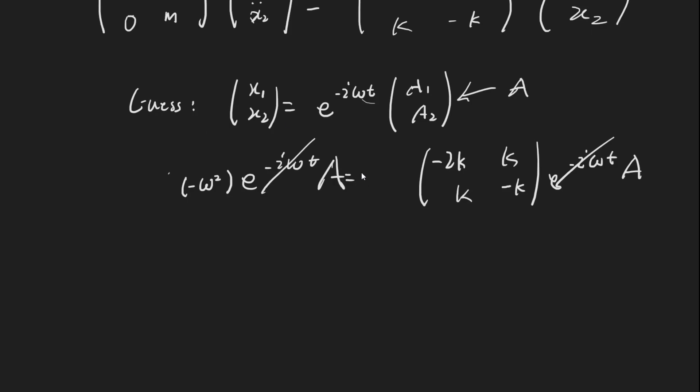So we can write it's equal to 1 over m, 0, 0, 1 over m. And we can move this over, factor out the A, and that should give us, well, let's multiply this out first. It's going to be minus 2k over m times k over m, and then it's going to be k over m times minus k over m.